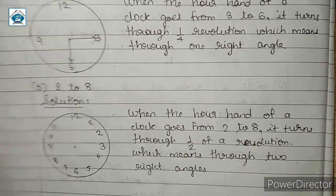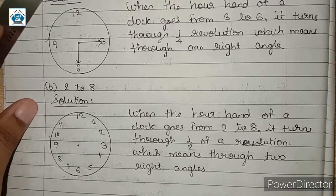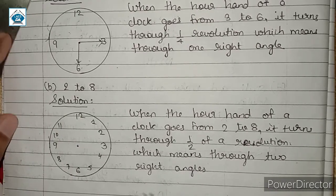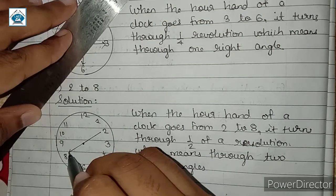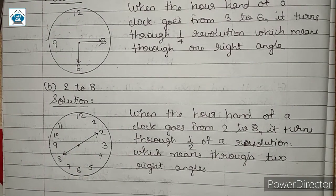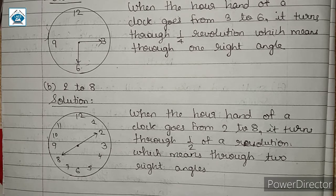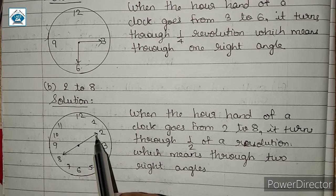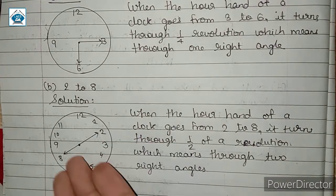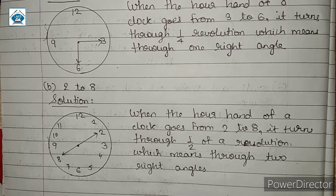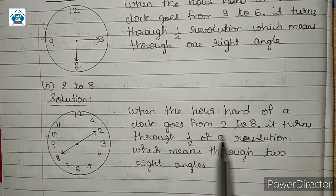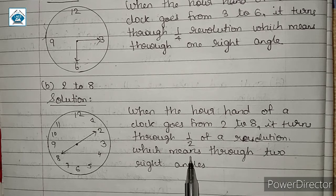In sub-question b, we are asked about 2 to 8. So when the hour hand of a clock goes from 2 to 8, we start from 2 and end at 8 — it forms a straight line. A straight angle has 2 right angles (180 degrees). Speaking of revolution, it covers half of the revolution, which means it turns through two right angles. So when the hand goes from 2 to 8, it turns through 1/2 of a revolution, which means 2 right angles.